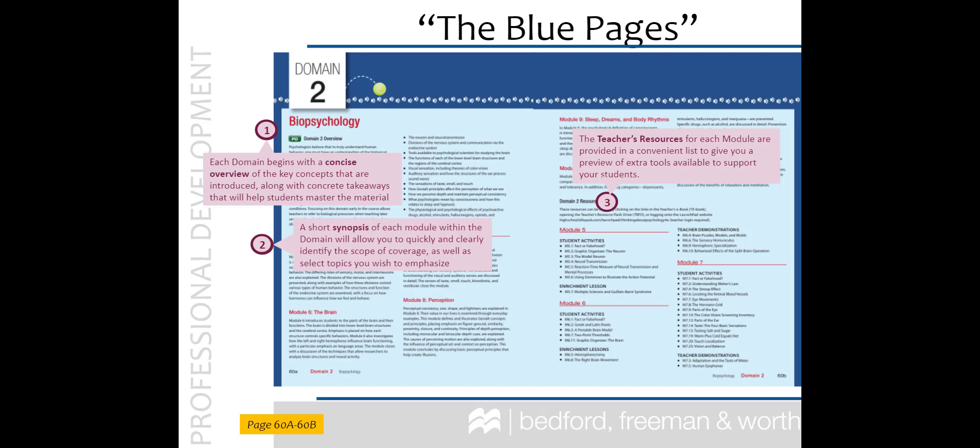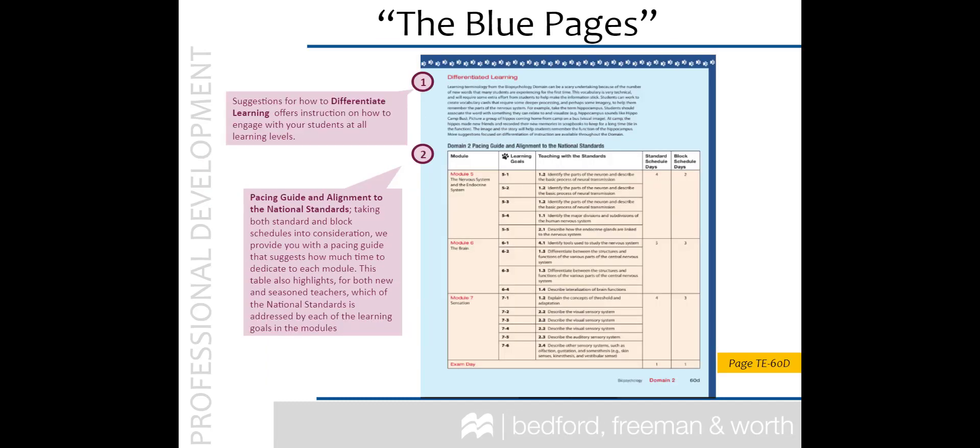In addition to margin content that wraps around the Student Edition pages, each domain begins with a set of blue pages to introduce you to the content in each of the modules and a list of resources that are available to support your instruction. A section on differentiated learning follows the resource list and precedes the pacing guide and alignment to the national standards. Suggestions for the amount of time to devote to each module is provided for both standard 45 to 50 minute classes and for block schedules.